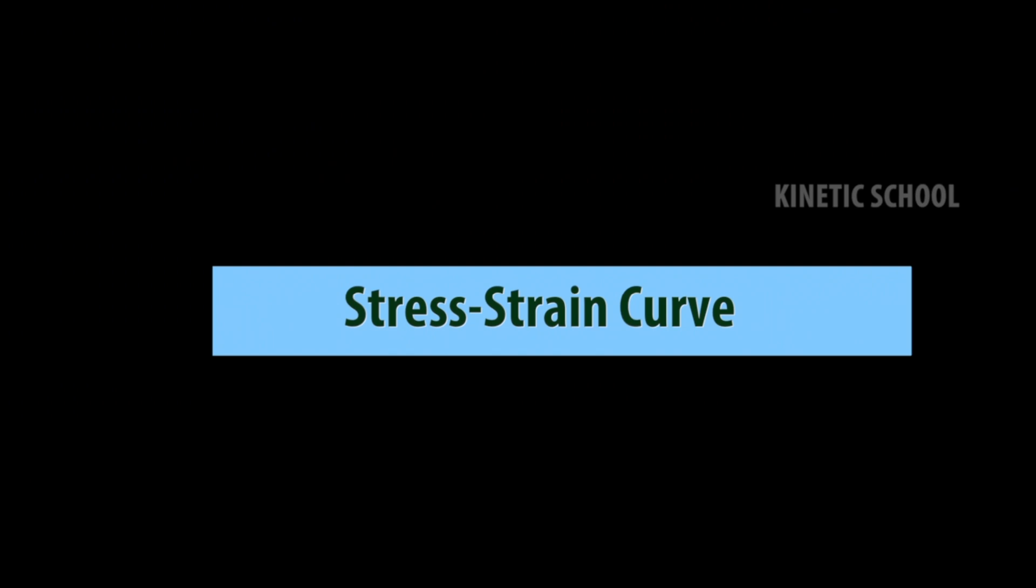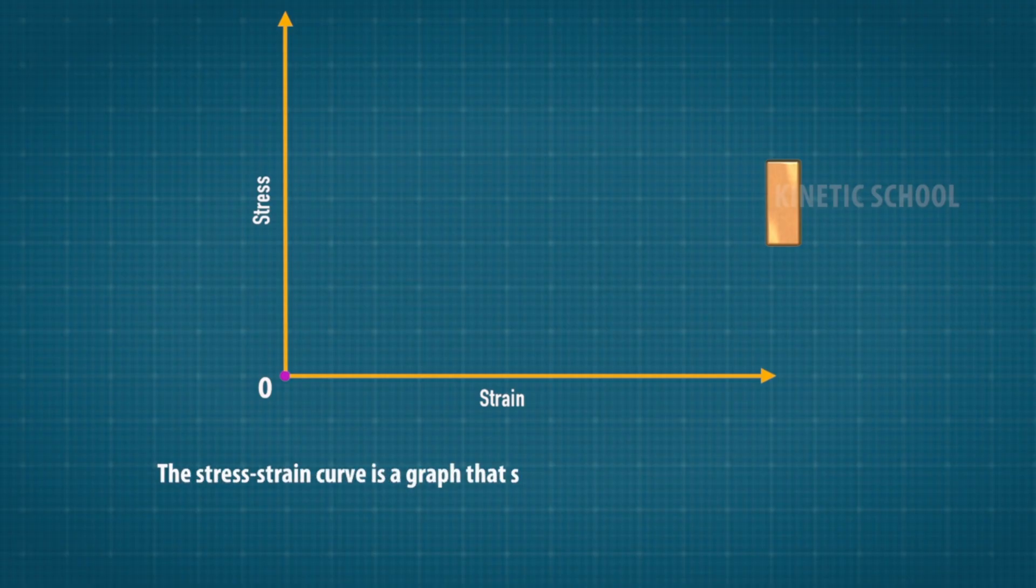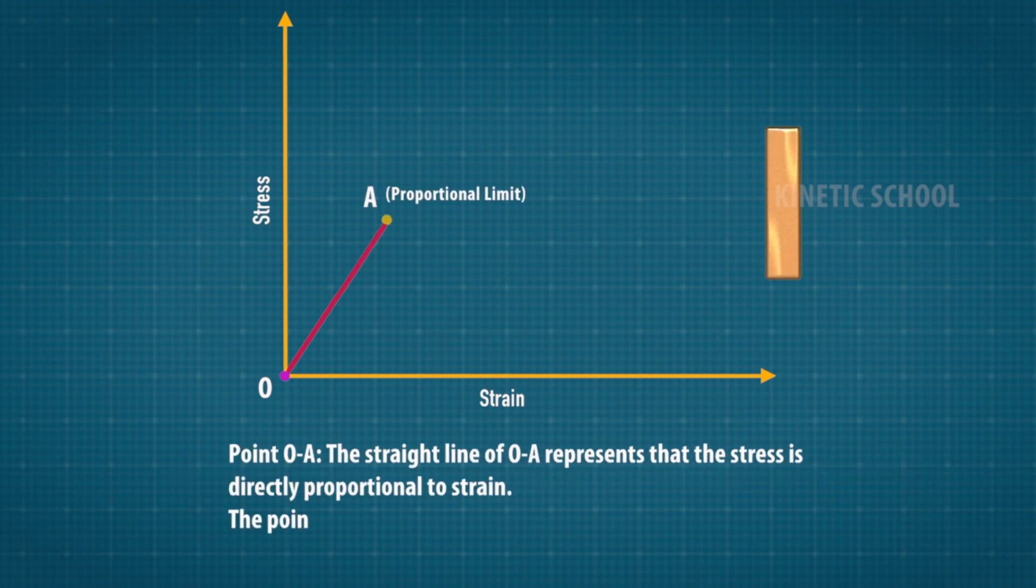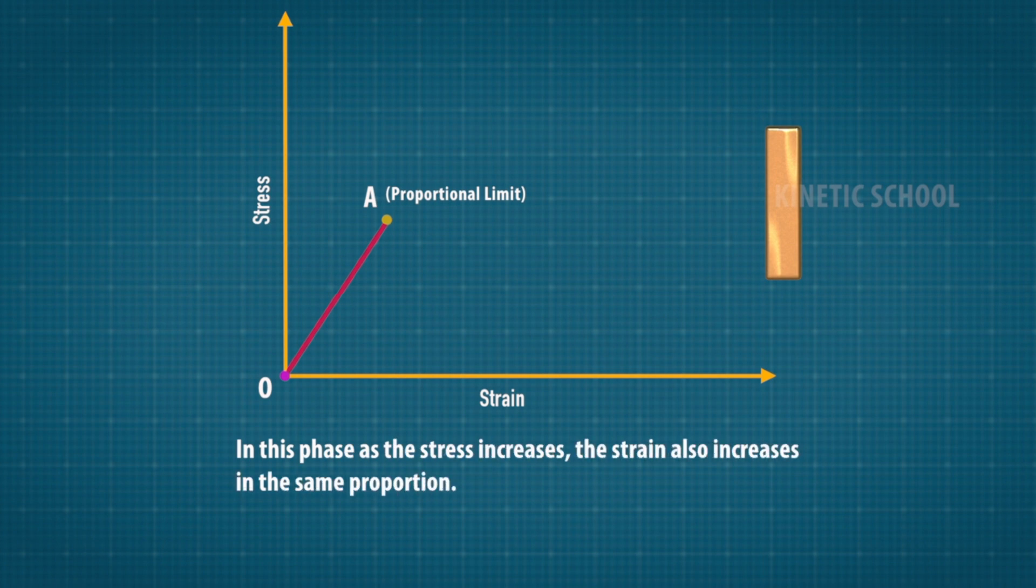The stress-strain curve is a graph that shows the change in stress as strain increases. Point O to A: The straight line from O to A represents that stress is directly proportional to strain. Point A is known as the limit of proportionality. In this phase, as stress increases, strain also increases in the same proportion.